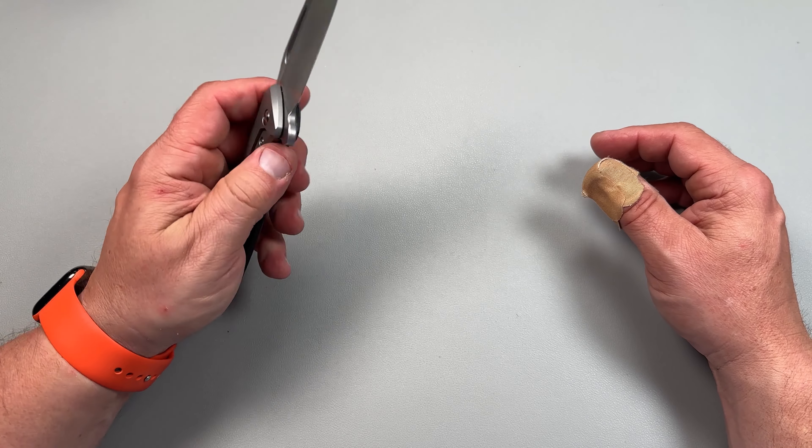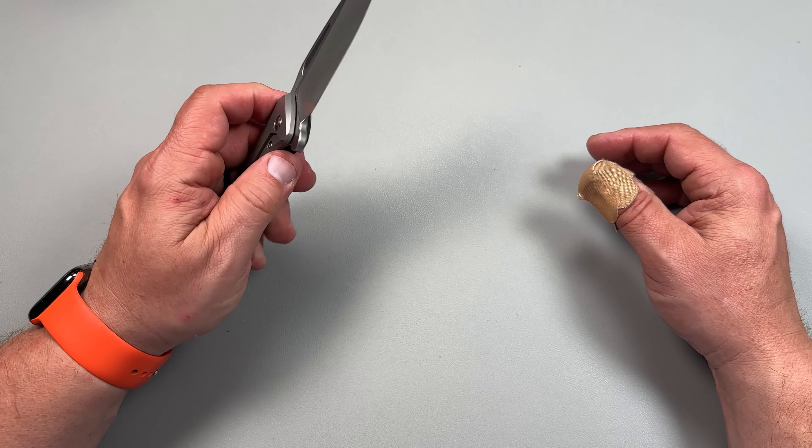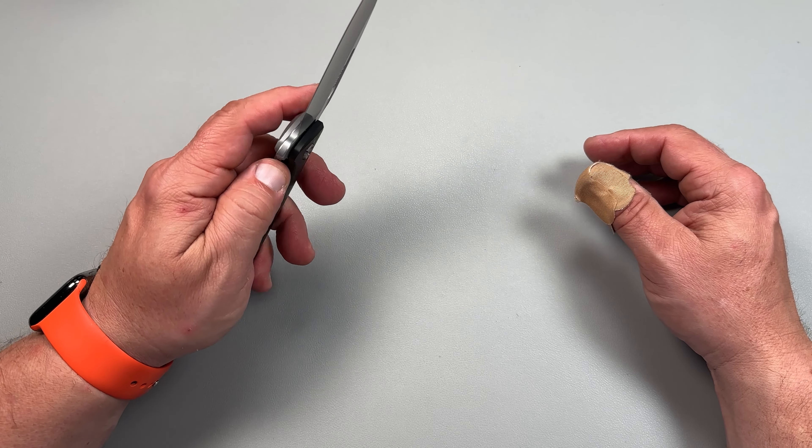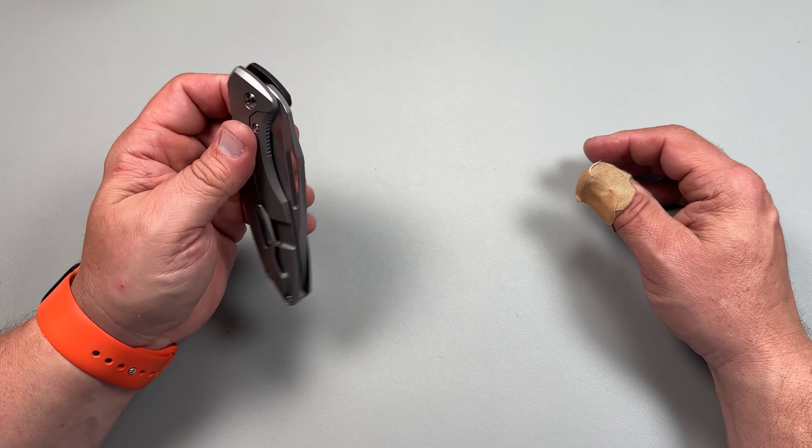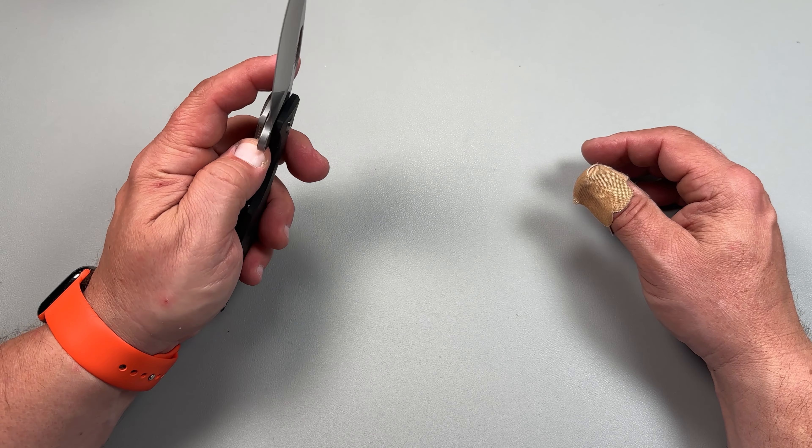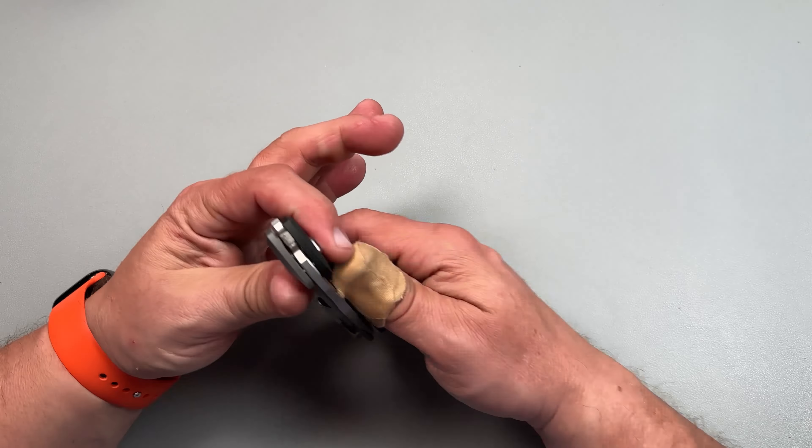When I got this, it was guillotine drop shut. I didn't care for that. It was like a Grimsmo Rask or Norseman. I don't like that. I don't like that crazy drop shut. It's like a Herman Sting. Just if you don't get your finger out of the way, it's going to get sliced. I prefer more control drop shut.